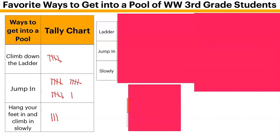The first category is Climb Down the Ladder — I've got one, two, three, four, and a bundle. Bundles are worth five, so that would be five. Then Jumping Right In: five, ten, fifteen, and one — that would be sixteen. And Hanging Your Feet In and Climbing In Slowly — I've got three tallies.